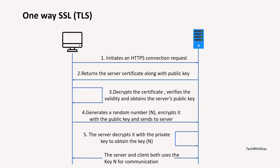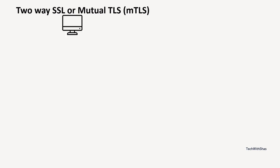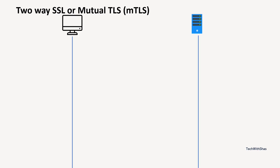Now let's focus on how MTLS, or mutual TLS, works. Here also we want to communicate between a client and server, but in MTLS both the client and server need to obtain a certificate from the CA authority first. In one-way TLS only the server needs to present a certificate and obtains it from the CA, but in MTLS — also called two-way SSL — we need to ensure that both client and server have obtained certificates from the CA authority. When the client wants to interact with the server, it sends a secure connection request to the server.